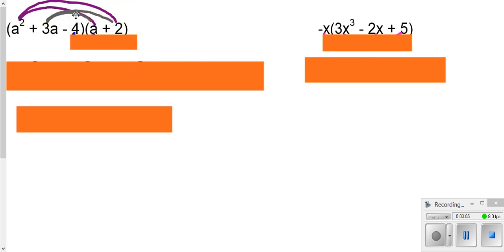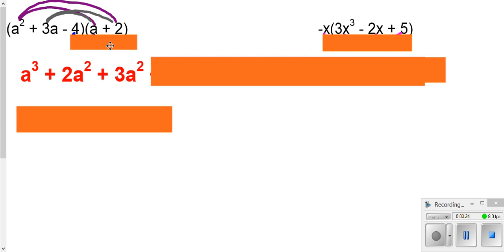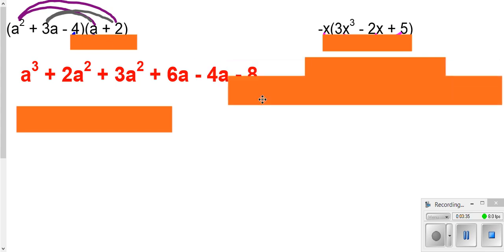So that's what we would need to do here. So our a squared times our a. Our a squared times our 2. Then we can't take a squared times anything else over here. So we move on to the next term. Take 3a times that a. Take our 3a times our 2. Then we move on to the next term because 3a has been multiplied by everything over here. So the negative 4 times the a, and the negative 4 times the 2.